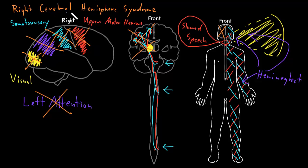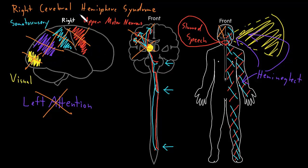Just like with the left cerebral hemisphere syndromes, there are many variants, because you can get partial lesions of just parts of the hemisphere involving some pathways but not others, or lesions of just parts of the cerebral cortex involving some functions but not others. So there's a group of syndromes for both the left and right cerebral hemisphere. I'll stop there for this introduction.